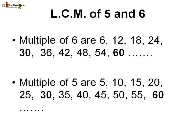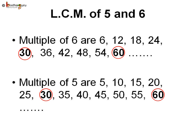If we take multiples of 5 and 6 and find the common multiples of them, then the multiples of 6 are 6, 12, 18, 24, 30, 36, 42, 48, 54, 60. Same way, the multiples of 5 are 5, 10, 15, 20, 25, 30, 35, 40, 45, 50, 55, 60. So, here 30 and 60 are the common multiples of 5 and 6.